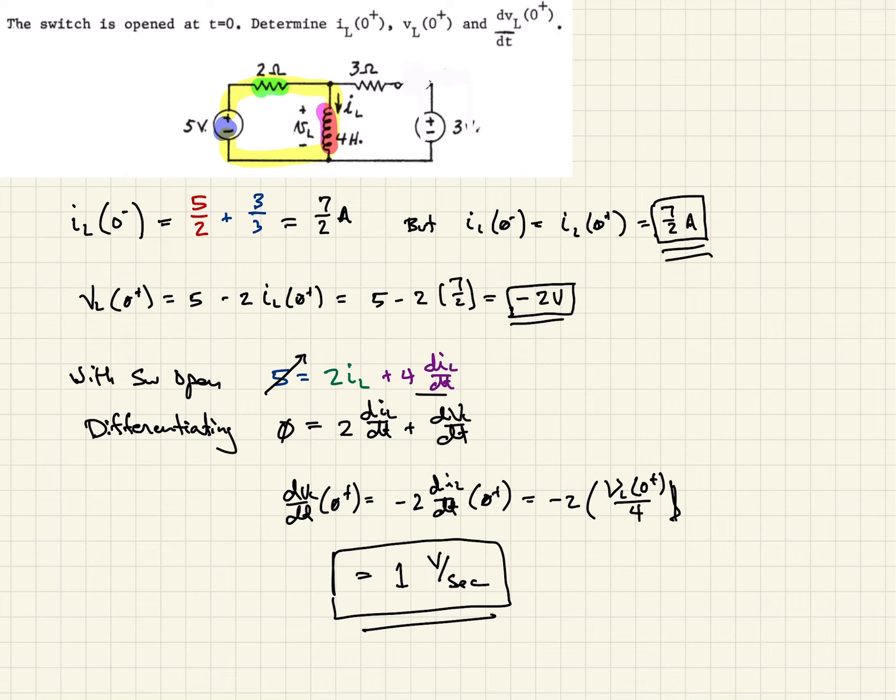So here's our current after the switch opens, our voltage, and then our change in the voltage with respect to time across the inductor at the moment the switch opens.